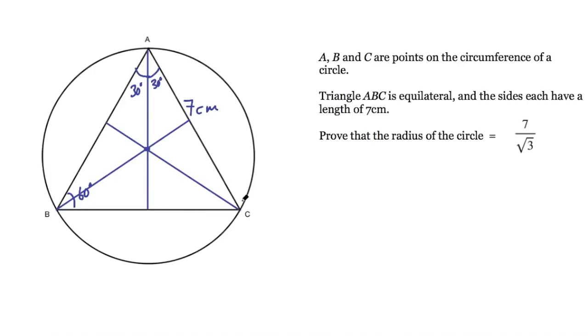Because they're bisecting these angles, they are meeting these edges of the triangle at 90 degrees. Also this length from A to the centre must be the radius. Using this setup is going to help me solve this problem.